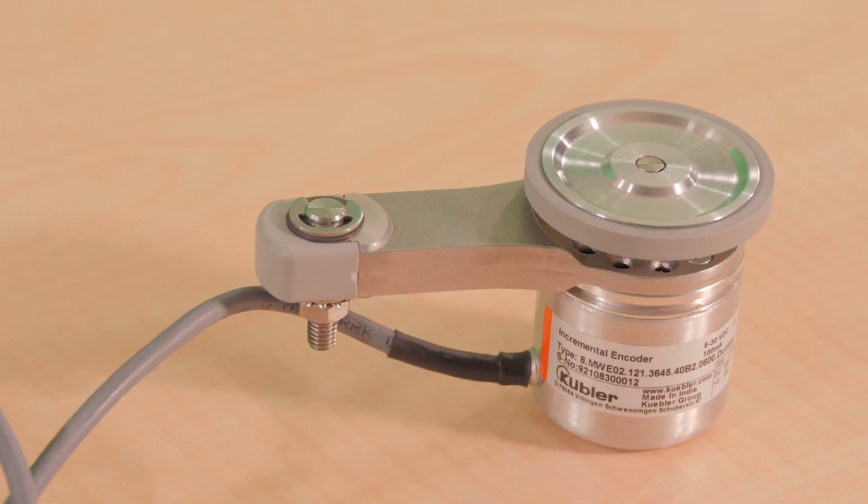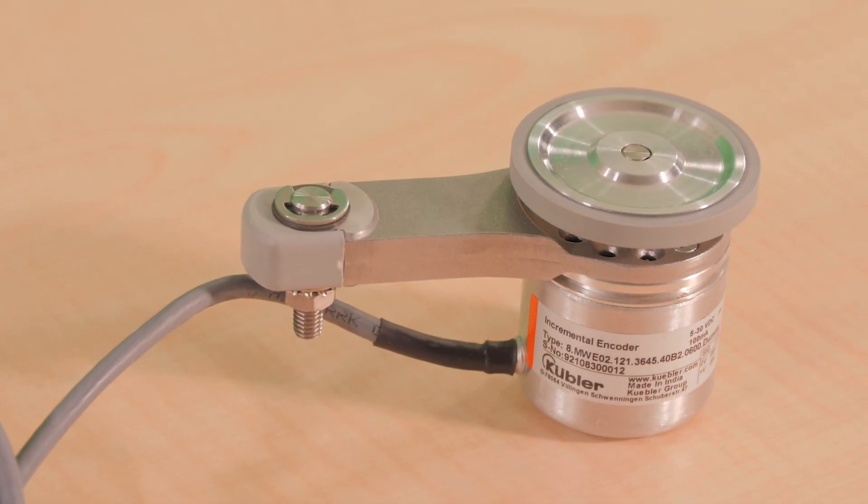When looking for speed, position, and distance measurement in applications with linear movements, a measuring wheel system like the MWE-02 from Kubler can be a good option.